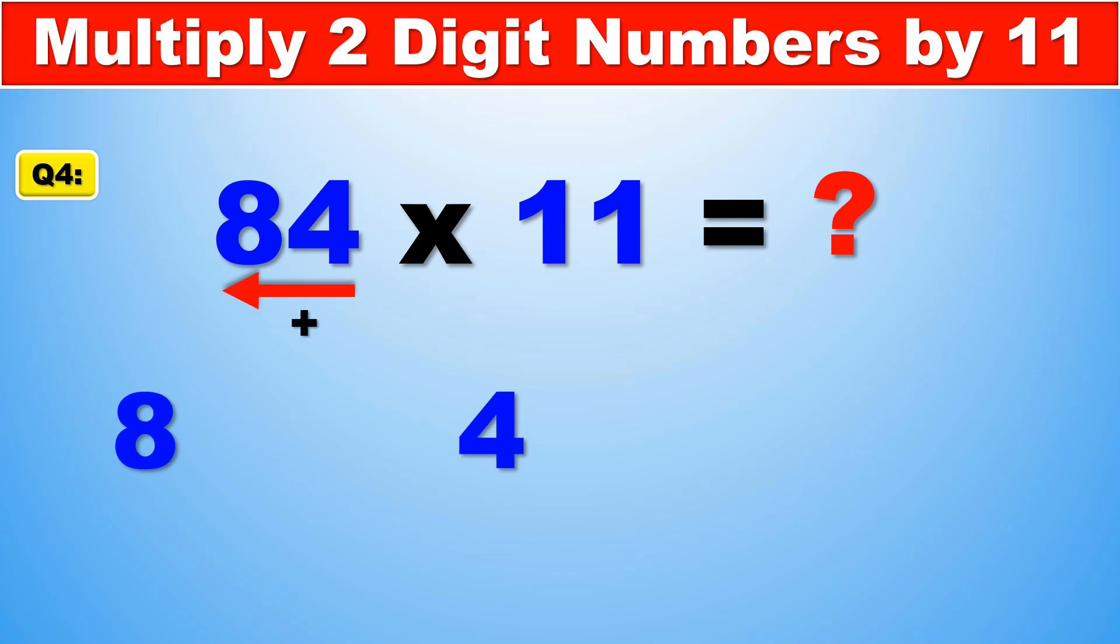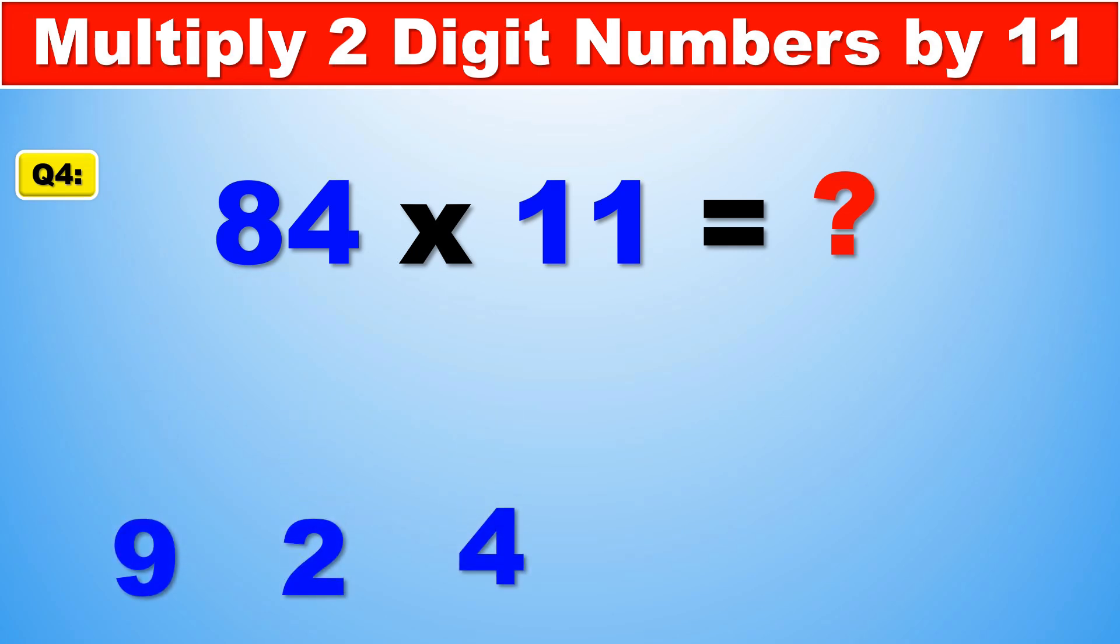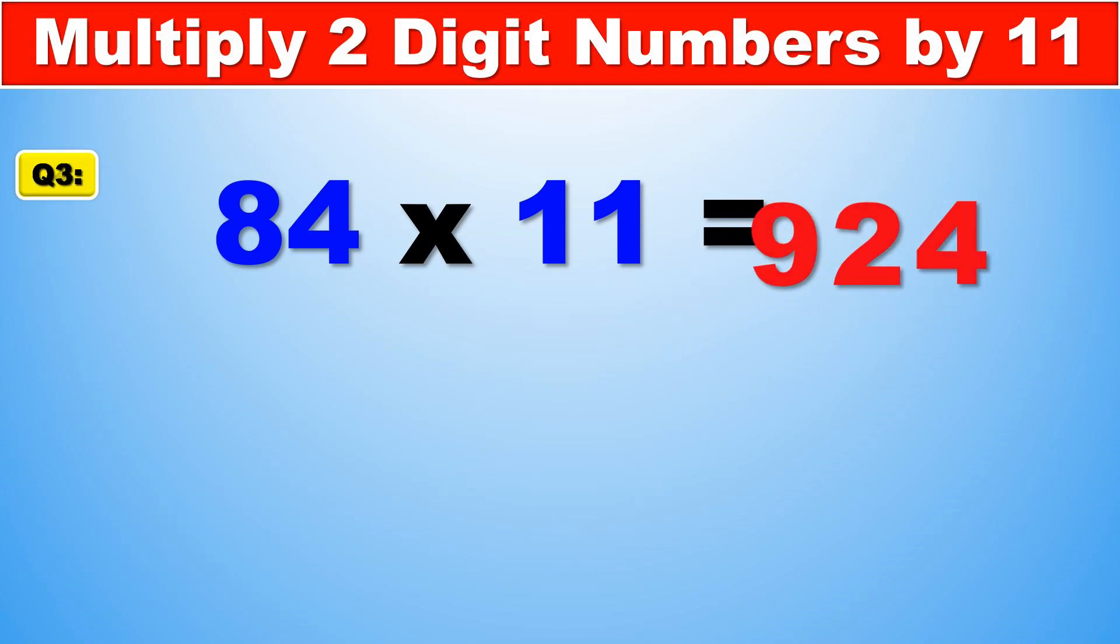In the middle, 8 plus 4 is 12. Two digits. So what do we do? We carry over the 1, keeping the 2 in the middle, and we add 1 to 8, which becomes 9. 9 is the first digit, 2 is the middle, 4 is the last, which means our answer, 84 times 11 is equal to 924.